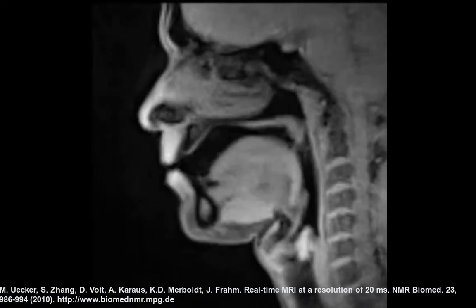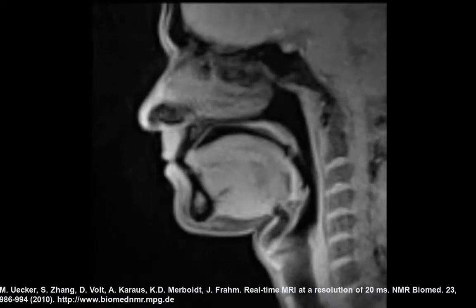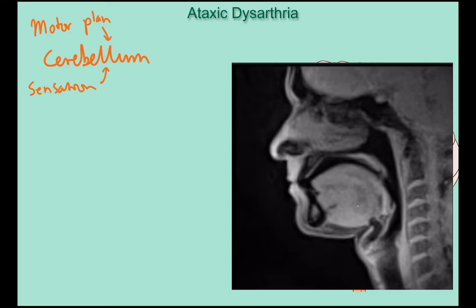Remember just how complicated speech is — it is the most complicated thing the body does. This is an MRI of real-time speech showing just what's happening. We can speak up to around 14 phonemes per second. You need to breathe in and out the right amount, have enough air for the sentence, turn your voice on and off between voiced and voiceless phonemes, change pitch and loudness, move your jaw, tongue, and lips rapidly, and your soft palate has to open and close appropriately — all at the same time, precisely coordinated.